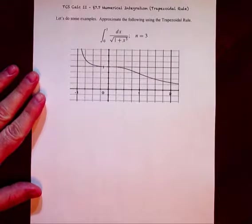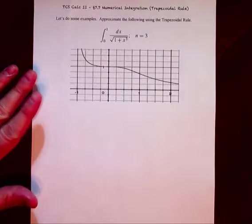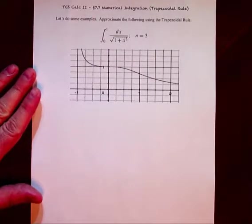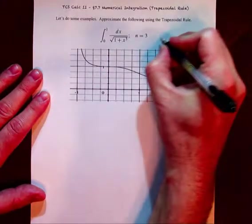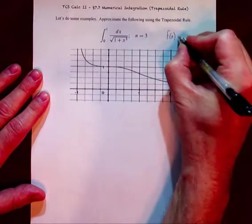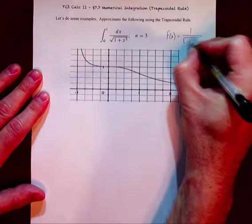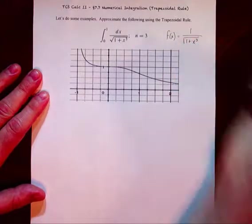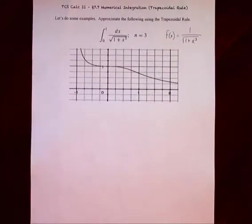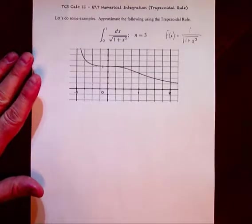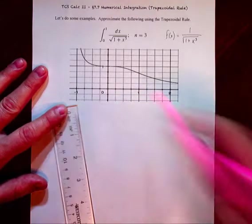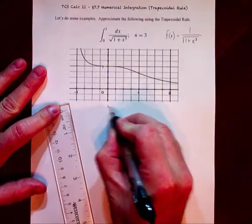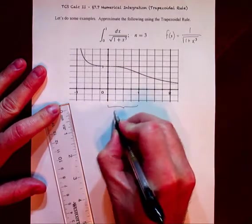Let's go ahead and work on this example right here. We have the integral of this function — let's define it as f — where f is one over the square root of one plus x cubed. Let's go ahead and show those sub-intervals on the graph. Our interval is zero to one.